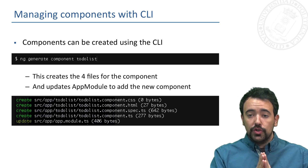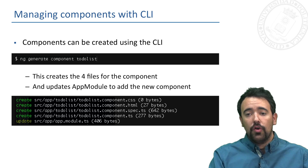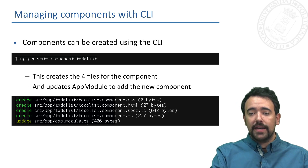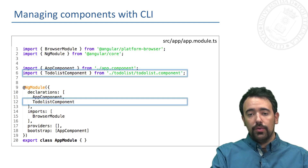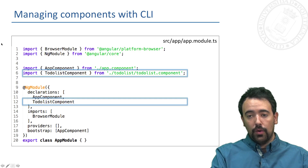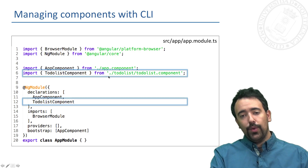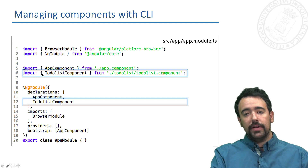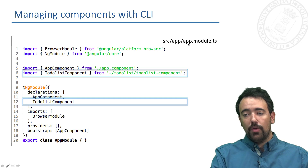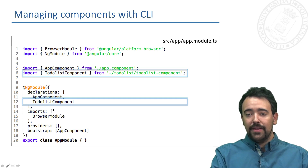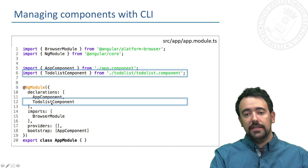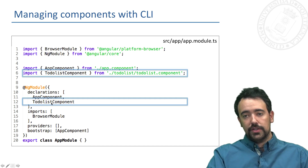The ng generate component command also updates the needed parts of the application module. You can see here how after creating the to-do list component, Angular automatically updates the application module file, importing the component and adding it to the declaration list of this module.